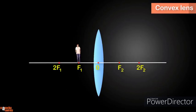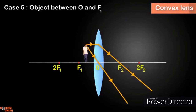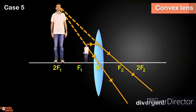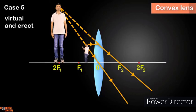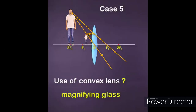For the final case, the object is between the optical center and the focus of the lens. Using rule one and rule two, the refracted rays are divergent, so we produce them backwards to obtain the image. The image is magnified, virtual and erect, and it's formed behind the object. This is the case when a convex lens is used as a magnifying glass.